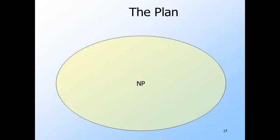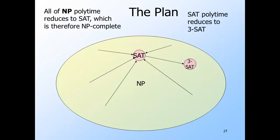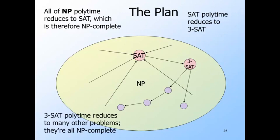Here is the plan for proving problems NP-complete. SAT — the satisfiability problem for propositional logic, asking whether an expression can be made true by some assignment of truth values — is one problem in NP. Cook's theorem shows every problem in NP reduces in polytime to SAT, making SAT the first known NP-complete problem. Cook also proved 3SAT NP-complete by reducing SAT to it; 3SAT is SAT restricted to expressions that are the AND of clauses with exactly three literals per clause, where a literal is a variable or its negation. From 3SAT, polytime reductions reach many other NP-complete problems.